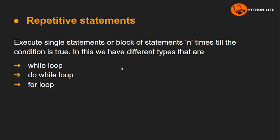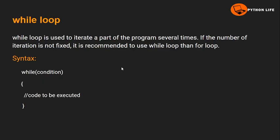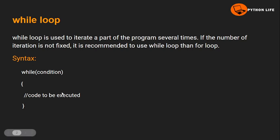The loop types are: while loop, do-while loop, and for loop. We will discuss them one by one. First, the while loop. The while loop is an entry-controlled loop. It is used to iterate a part of the program several times. In the syntax for the while loop, we have a condition and statements, and the code to be executed as long as the condition is satisfied.